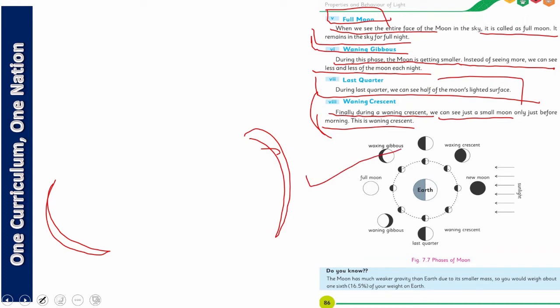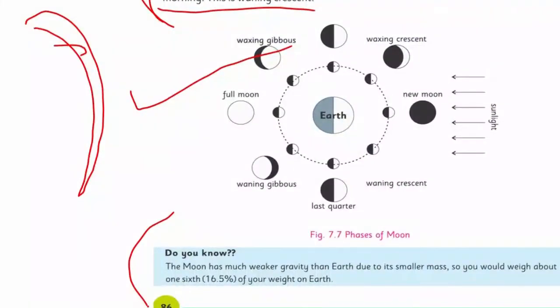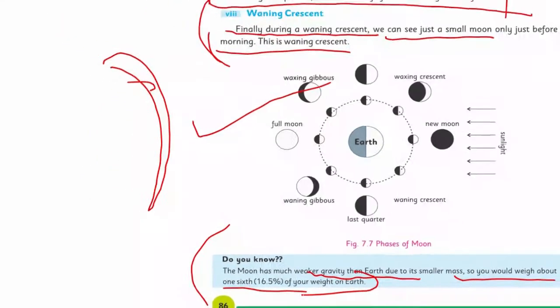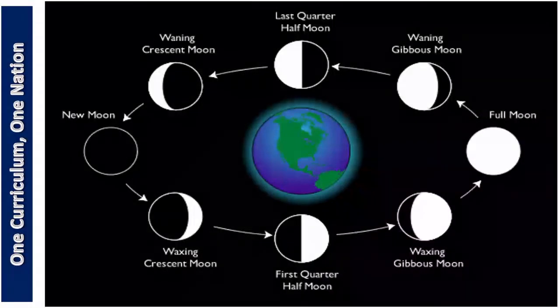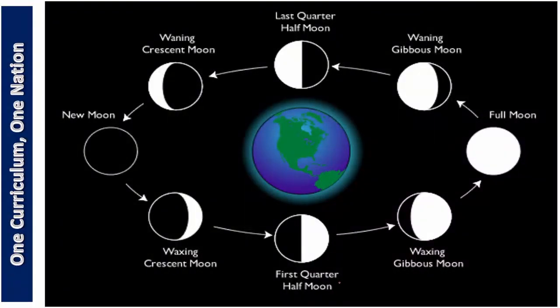Dear children, this is the full picture. But I will tell you a little more beautifully in detail. I am sure you will love it. But before that, see the interesting information. Do you know? Moon has much weaker gravity than earth due to its small mass. So you would weigh about one sixth of your weight on the earth. In the last chapter, you read that earth attracts the body towards its center. So earth, since it is heavier, it pulls with more force as compared to moon.